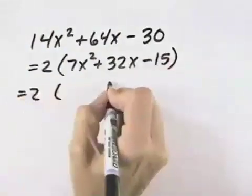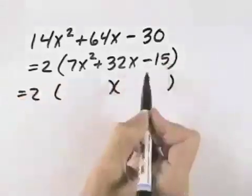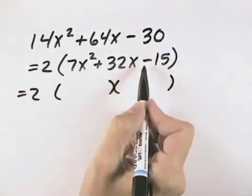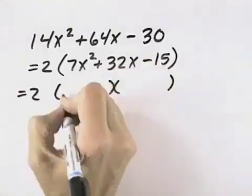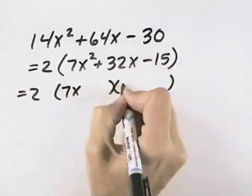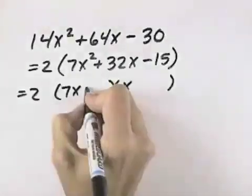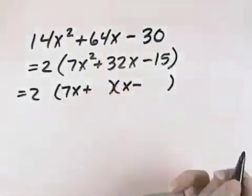Now we need to try to break down our trinomial. Because the second term is negative, that means we'll have opposite signs. And in the first term, we need to end up with a product of 7x squared. That means we'll need a 7x and an x. We could start with a plus and a minus, but we might need to reverse those.